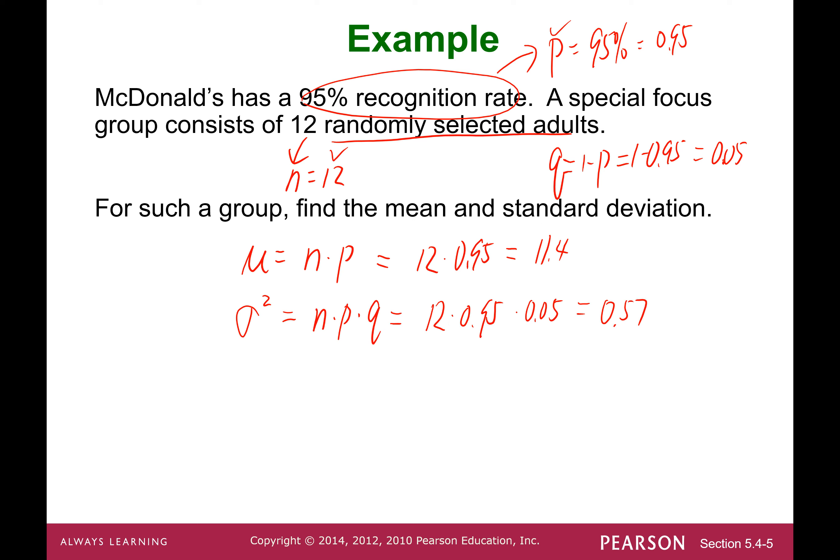We know the variance, so we can find the standard deviation. Standard deviation is the square root of npq, the square root of 0.57, which is approximately 0.75. Now we know the mean measures center and standard deviation measures the variation.